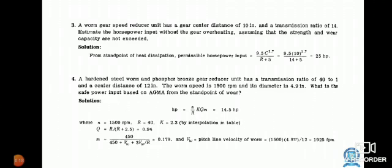M = 450 / (450 + V_W + 3V_W / R) = 0.179, and V_W pitch line velocity of worm = (1500 × 4.9 × π) / 12 = 1925.